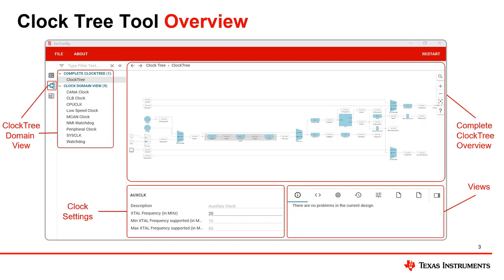Introducing the ClockTree tool — an interactive ClockTree configuration software within sysconfig for each C2000 device. The ClockTree tool allows the user to visualize the device ClockTree, interact and customize ClockTree elements, and maintain a record of registers affected by user interactions on the device ClockTree, all in one place.